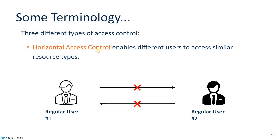The second type is horizontal access control. For example, if you and a friend both have Instagram accounts, you have the same options and features — bio, posts, reels, profile photo editing. However, you can only edit your own profile, not your friend's. Even though you have the same features, you cannot access another user's data. That is horizontal access control.